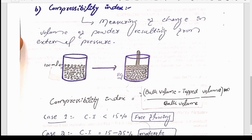The next method is the compressibility index. Compressibility is the measurement of change in volume of the powder resulting from external pressure. This is the property of the powder to compress when external pressure is applied. As shown in the diagram, the bulk volume of the powder without external pressure is 100 ml. When external pressure is applied, the bulk volume decreases to 80 ml. This reduction is called compressibility.